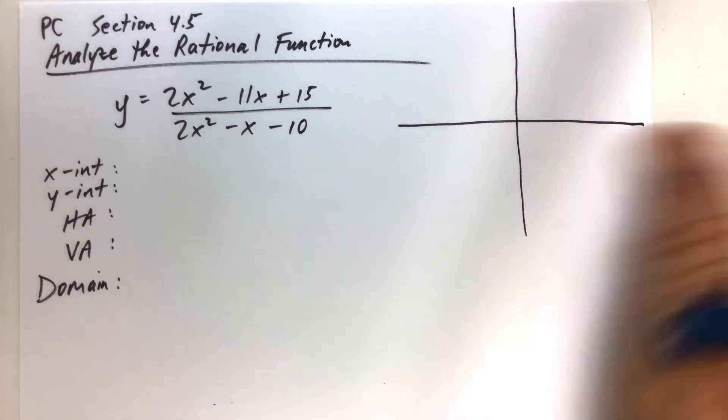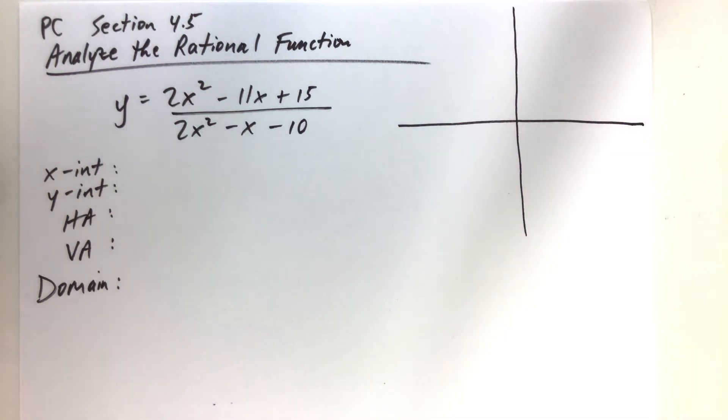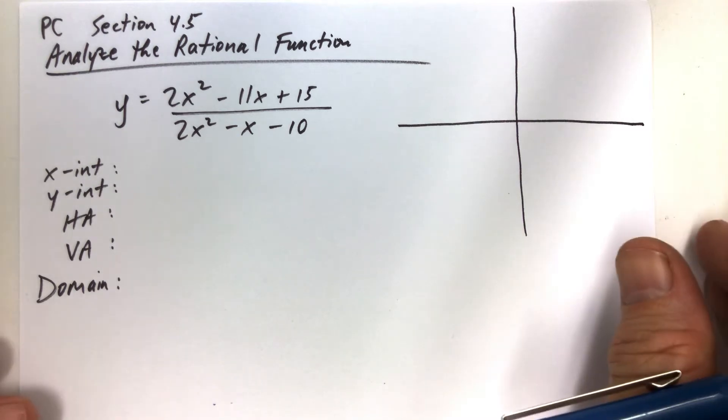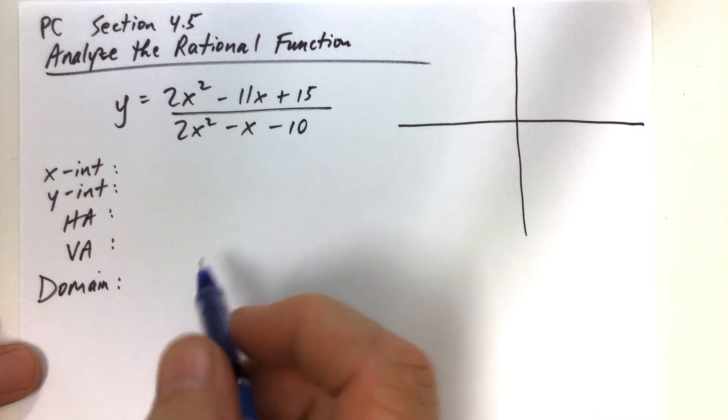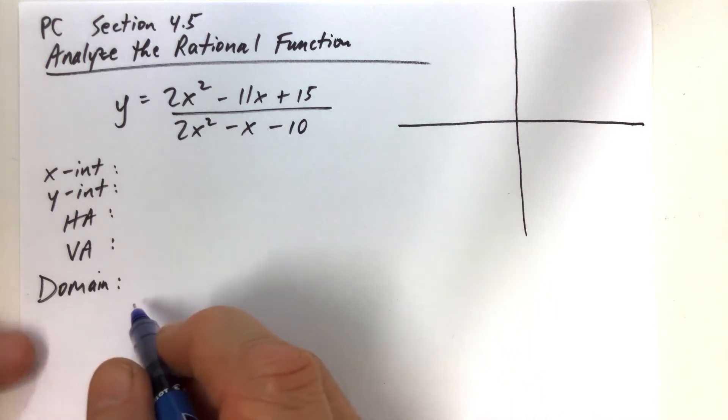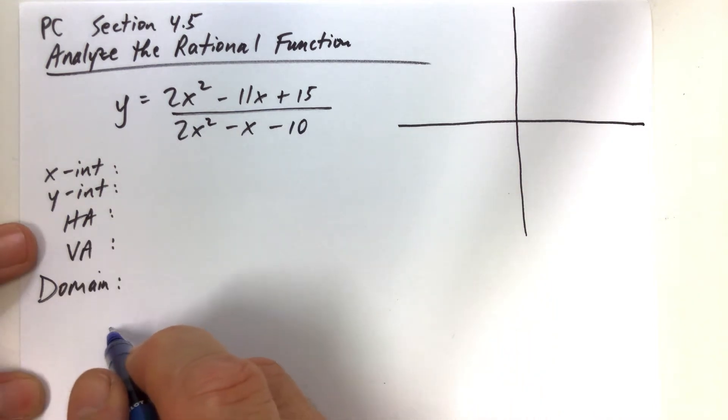So this is kind of like the final level type problem for this section, analyzing a rational function. It has a little bit of everything in it. In fact, as you notice right off the bat, perhaps you have to factor the numerator and factor the denominator.